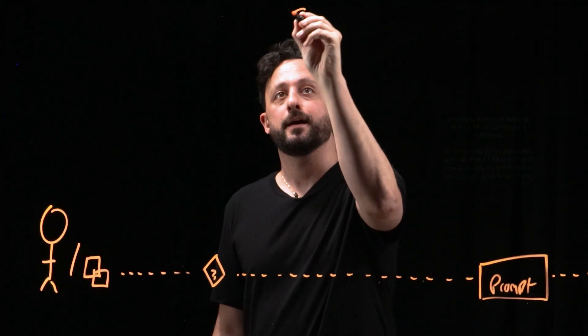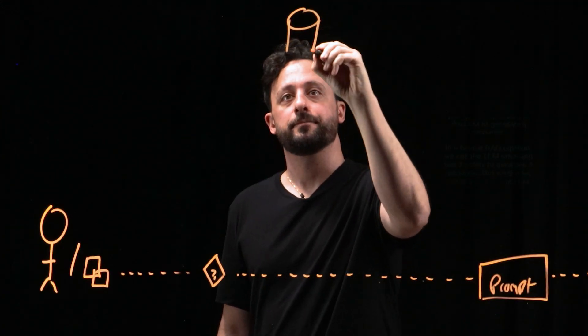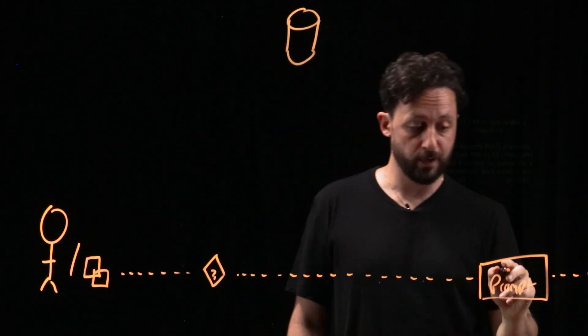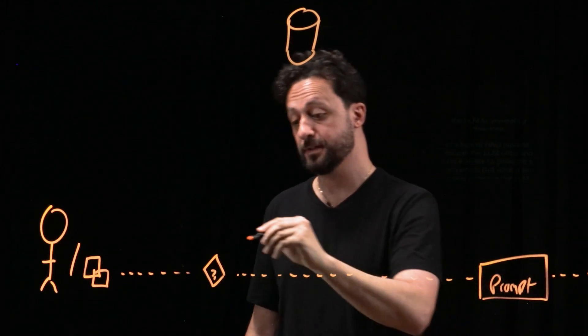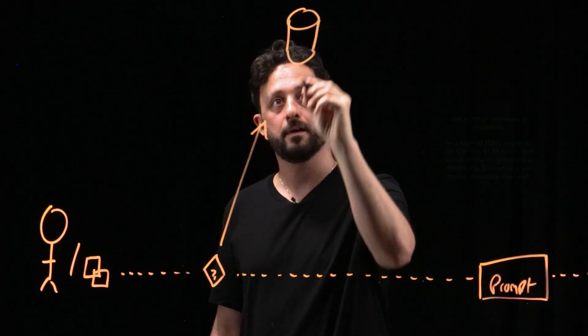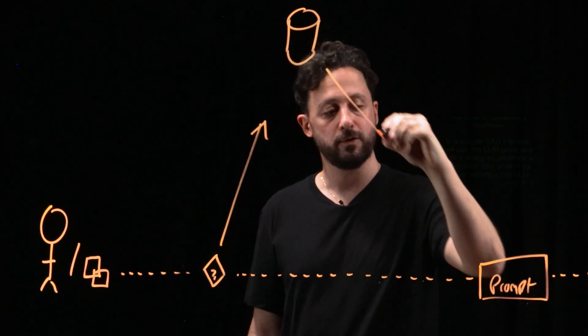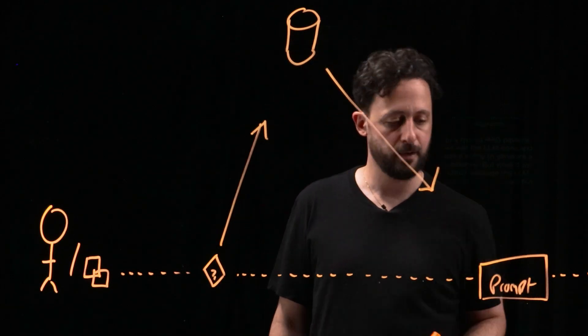To make this RAG, we can add a vector database. So instead of just going directly and getting itself interpolated into the prompt, it's going to hit this VectorDB. And the response from that VectorDB is going to be used as context for the prompt.